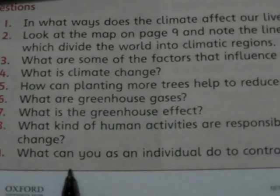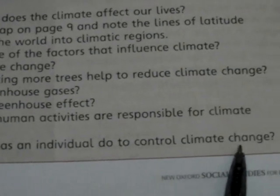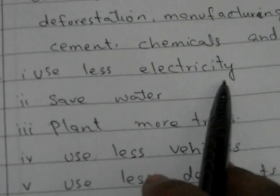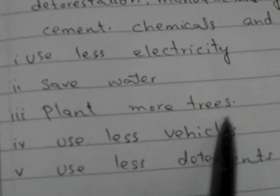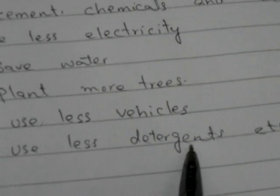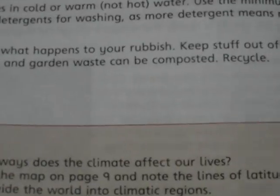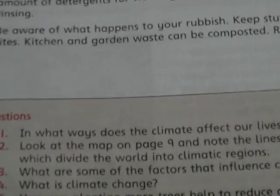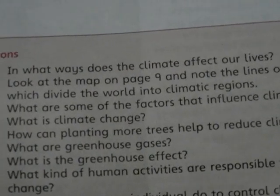Question nine: What can you as an individual do to control climate change? The answer is: use less electricity, save water, plant more trees, use fewer vehicles, and use less detergent. That completes our Lesson 2: World Climate exercise. We will continue with the next chapter.